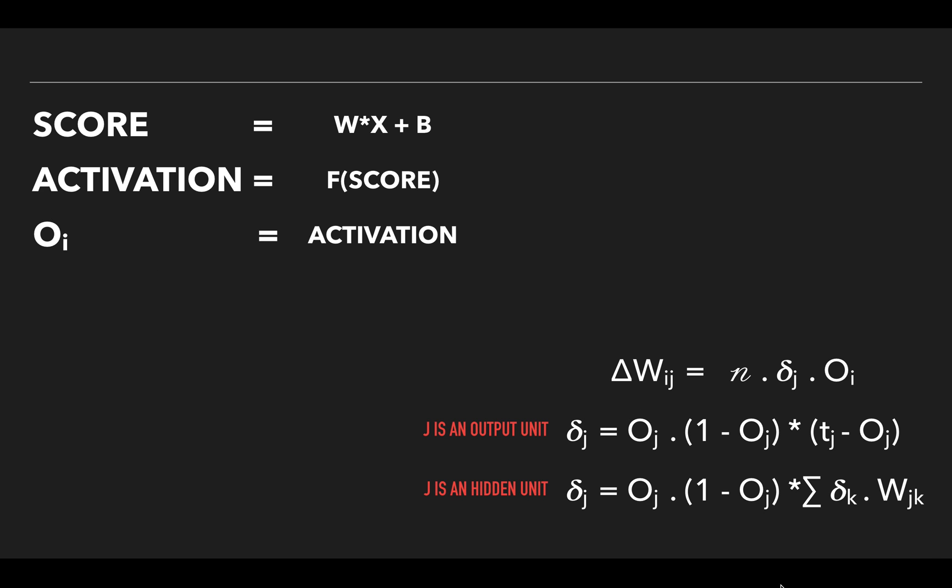In backward propagation, for example with sigmoid function, we have these formulas. We update the weights from the i-th node to the j-th node by n times delta_j times output of i-th node, where n is the learning rate. Delta_j is calculated by two formulas: if it is an output unit, it is calculated with this formula where t_j is your target value. And if it is a hidden unit, then we can calculate by this formula.